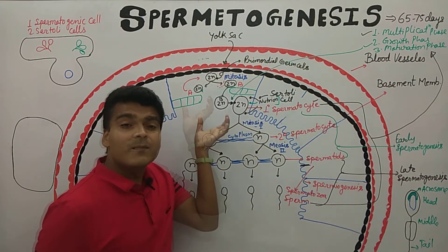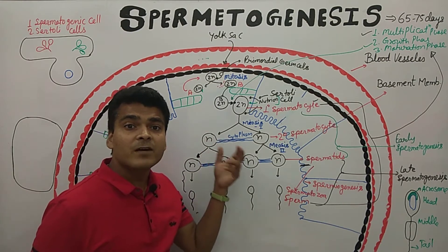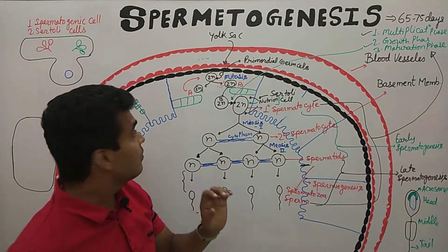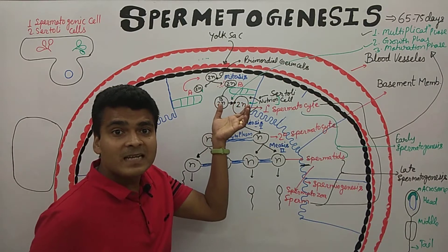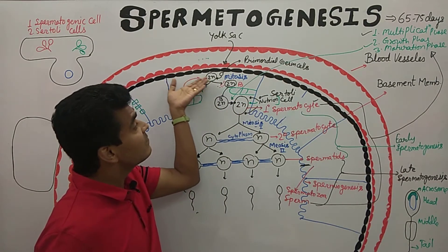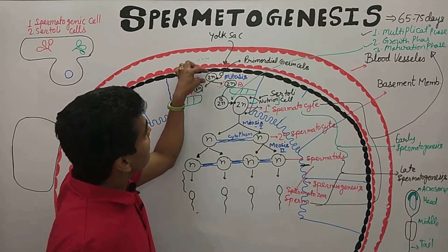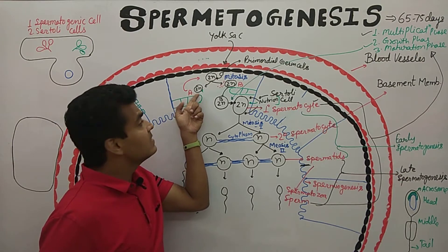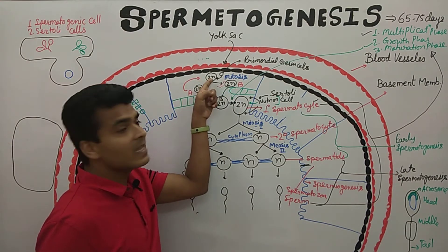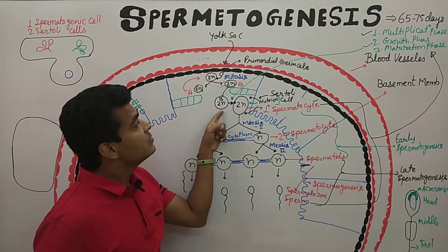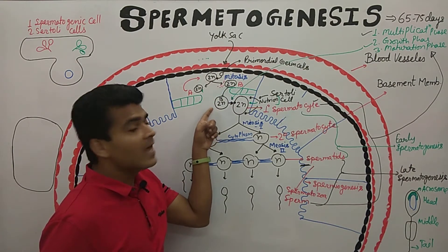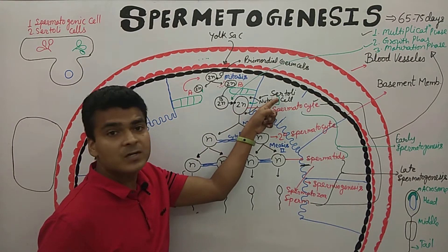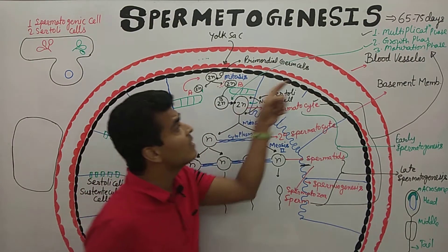Spermatogenesis starts in seminiferous tubules. In seminiferous tubules we have two types of cells: the first one is Sertoli cells and the second one is spermatogenic cells. Spermatogenic cells are basically stem cells. These stem cells undergo mitosis and convert into two cells — the first is known as Type A cell and the second as Type B cell. Type A cells are reutilized; Type B cells move past the junctional barrier into the adluminal part where they further grow in the presence of Sertoli cells, which provide nutrition.